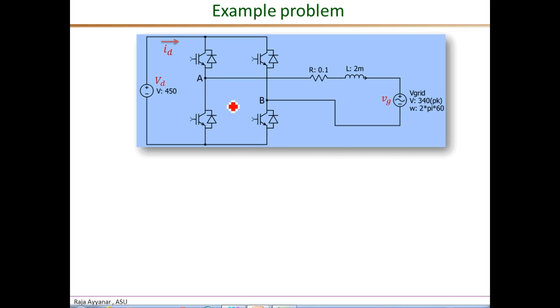Here is the example two-pole converter with pole A and pole B shown explicitly. This two-pole converter interfaces a DC voltage source with an AC grid. It is given that the DC voltage is fixed at 450 volts and the AC grid is 240 volts RMS, 60 Hertz single phase AC system. The 340 is really square root 2 times 240, and 377 is 2 pi times 60.